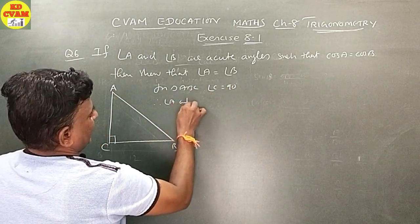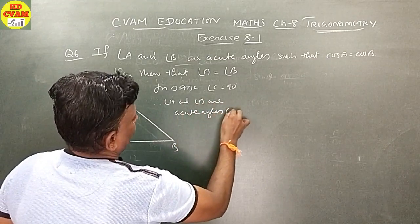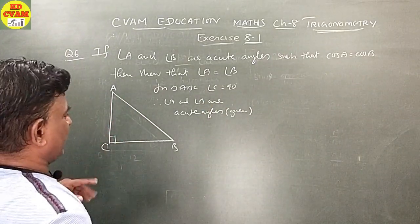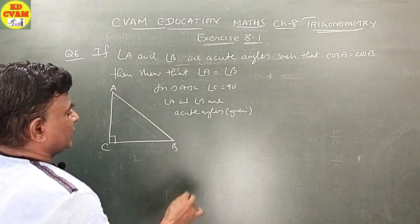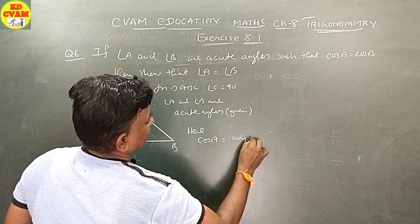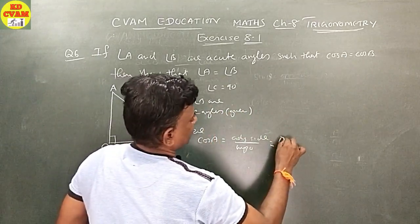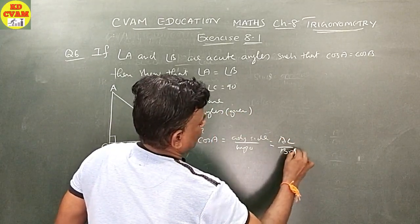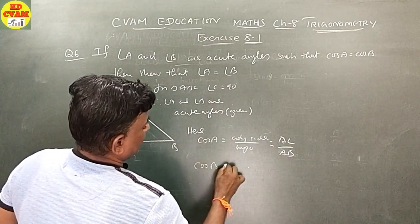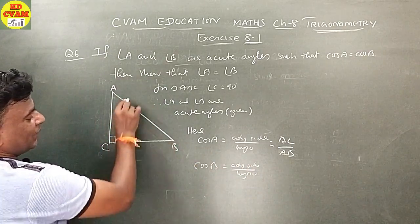Therefore angle A and angle B are acute angles. Cos A is equal to adjacent side upon hypotenuse, which equals AC upon AB. Similarly, cos B is equal to adjacent side upon hypotenuse, which equals BC upon AB.